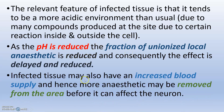Infected tissue may also have increased blood supply due to the inflammatory response. Whenever a tissue is infected, the body will try to prevent that infection by sending more blood to that area to counter the inflammation. So there will be increased blood supply, and hence more anesthetic will be removed from the area and cleared from the blood before it can reach the neuron. More anesthetic is cleared due to the increased blood supply.